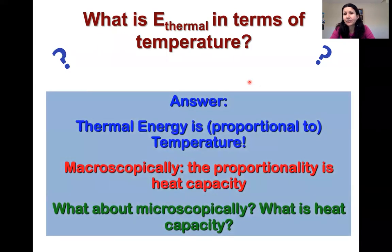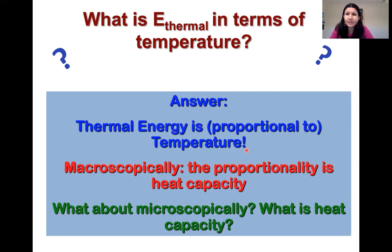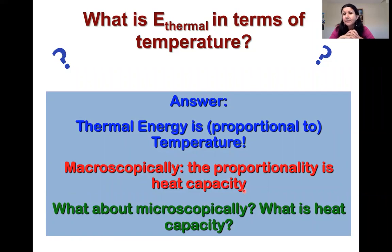We know that thermal energy is proportional to temperature macroscopically. What is that proportionality related to? That was heat capacity. We saw that how fast temperature changes based on the amount of energy you're adding to the system depended on heat capacity, which was a function of the amount of stuff you had — so mass and specific heat — which was related to the specific type of material and also the phase of the material.